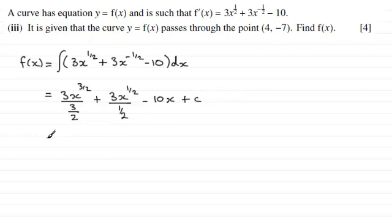And if we tidy these terms up first of all then for this one here 3 divided by 3 over 2 gives us 2. And you've got 2x to the power 3 over 2 then. 3 divided by a half is 6 so that's plus 6x to the power half minus the 10x then plus the constant of integration plus c.